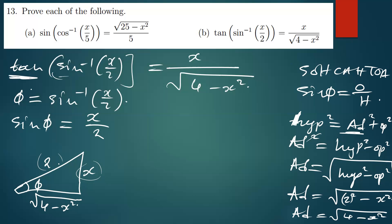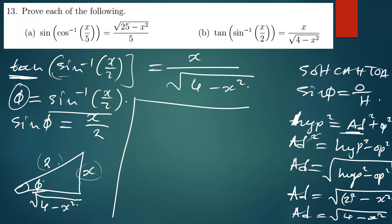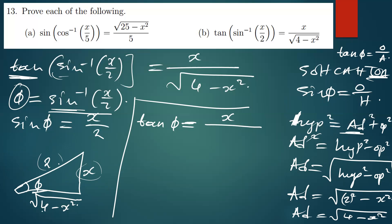So now we find tan of φ. Remember we said φ is sine inverse of that, so our φ there is the same as that. So tan φ will therefore be equal to the opposite over the adjacent — the opposite in this case is x, and the adjacent is the square root of 4 minus x squared. This is exactly what you're supposed to do. So this was a simple question. Let's move on to the next question.